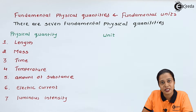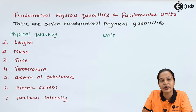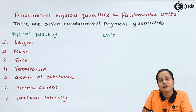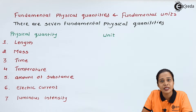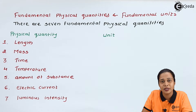There are two types of physical quantity. The classification of physical quantity comes under two categories. The first one is fundamental physical quantity, and the second one is derived physical quantity.